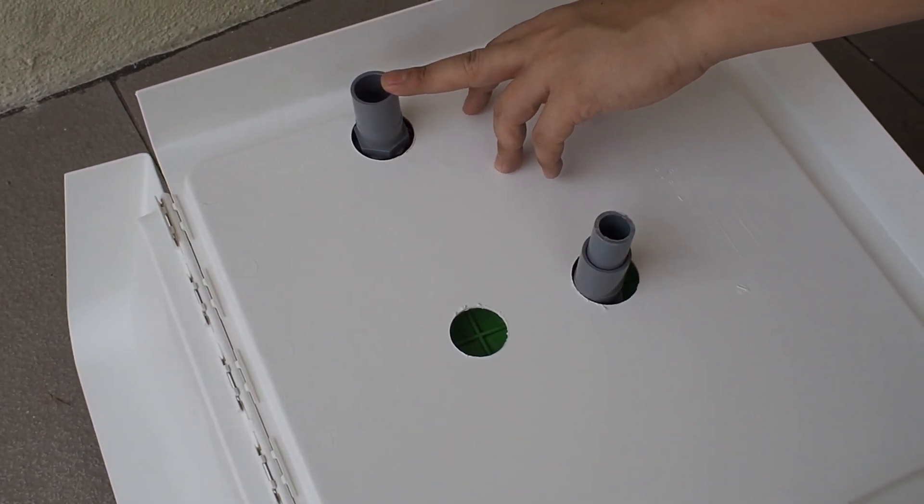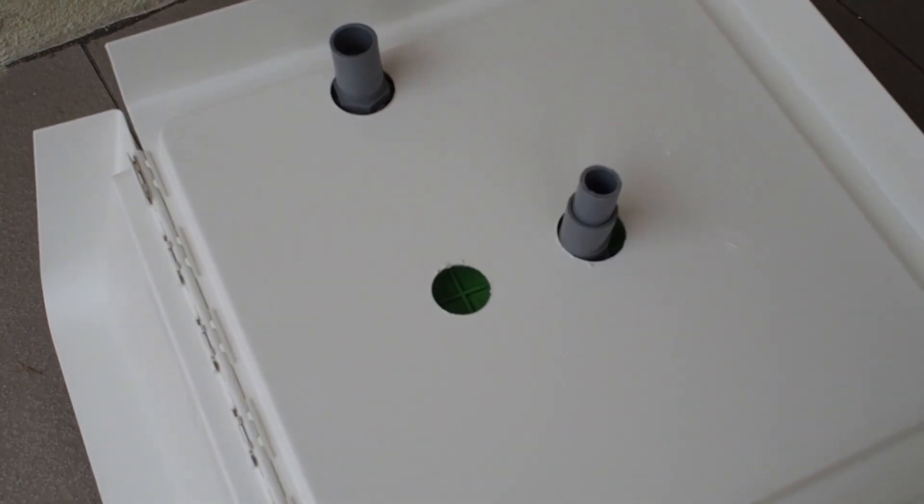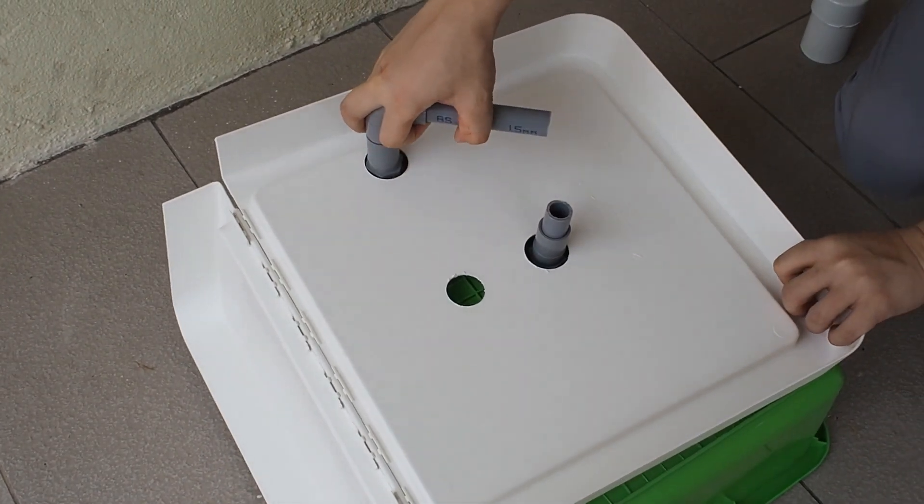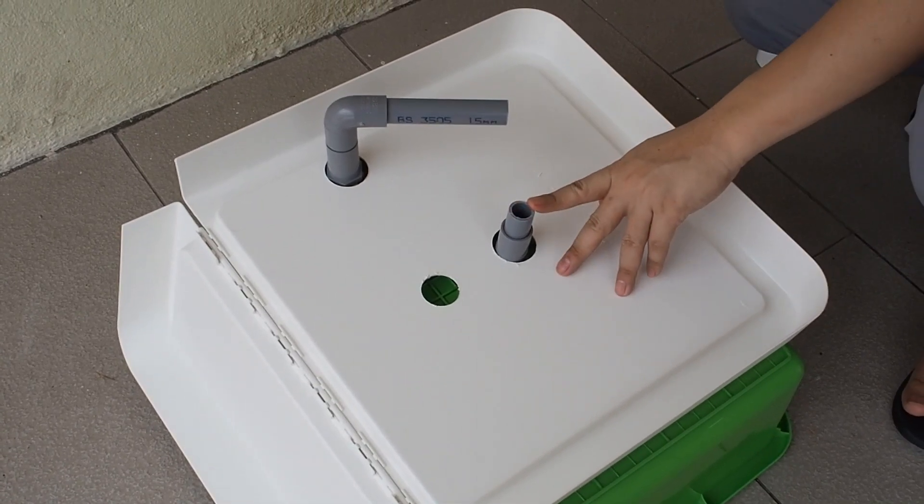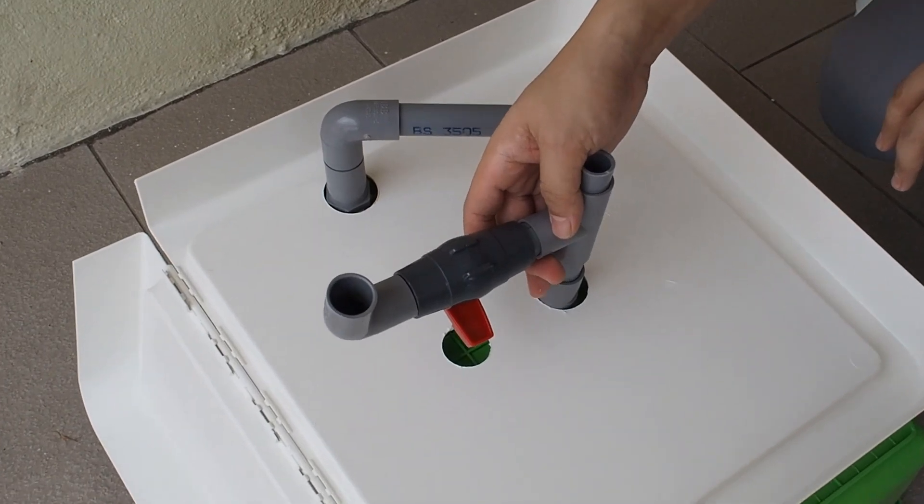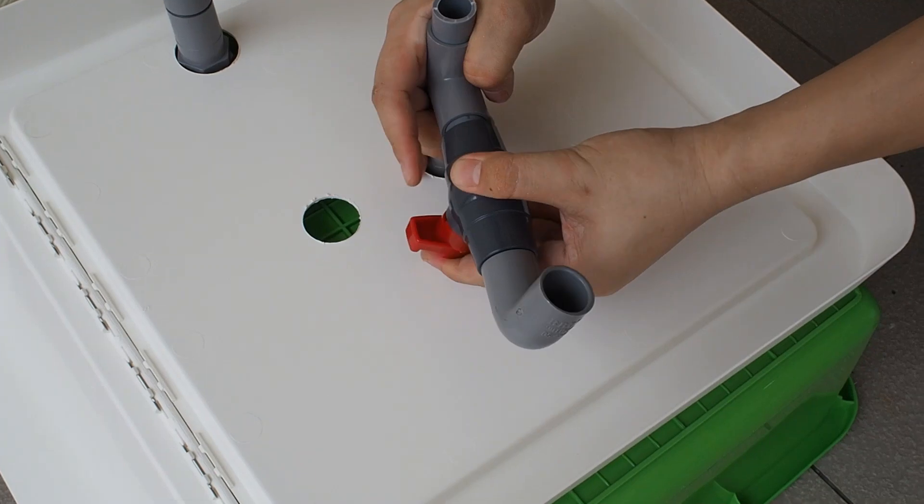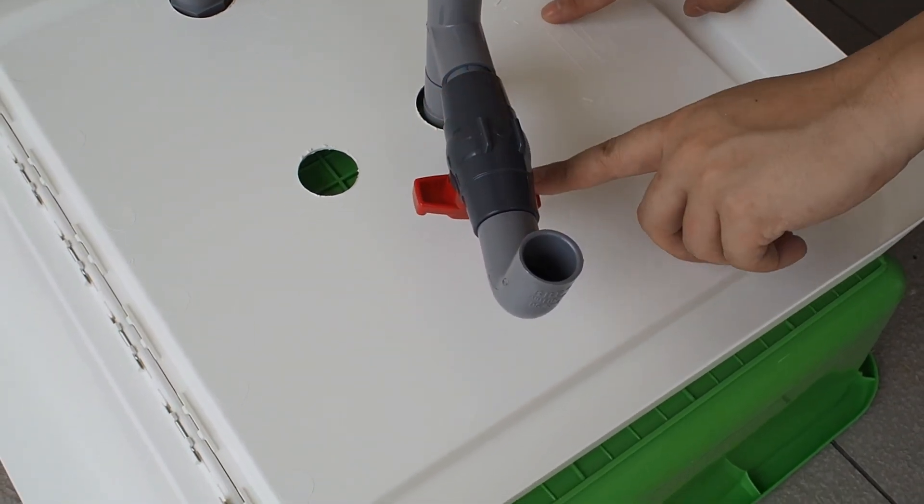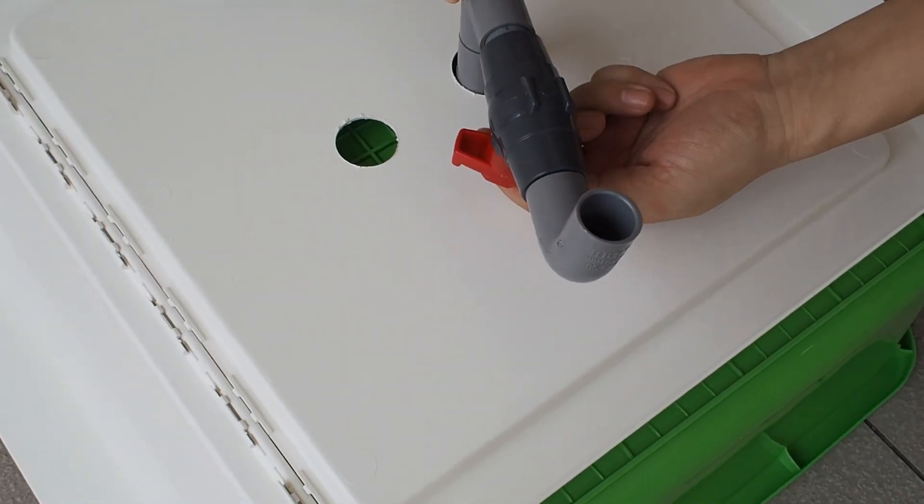And this one is to connect with what we call the bell siphon drain. So this part, we just put this one. This angle you can add to here. And next, you have to assemble this one. This valve is for you to control the water flow rate to the tower. You can adjust this one later after you finish assembly.